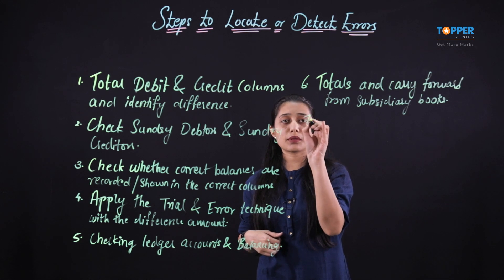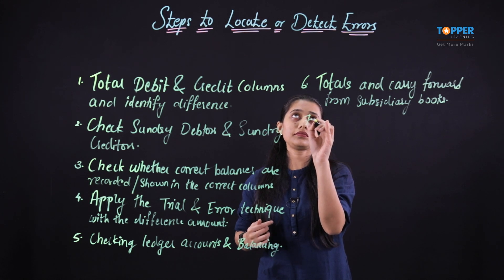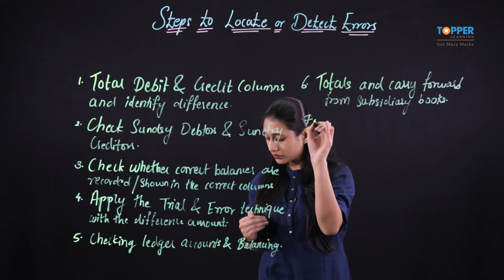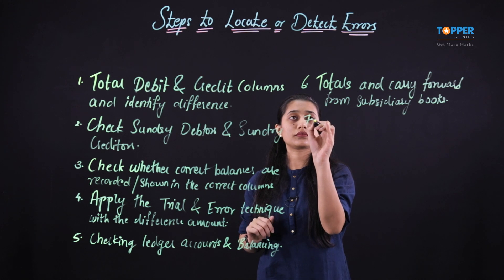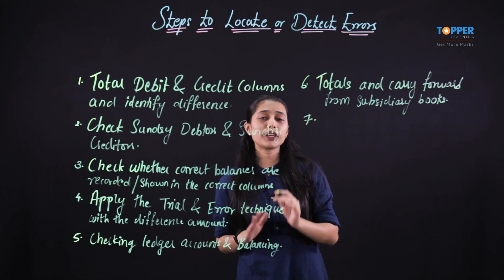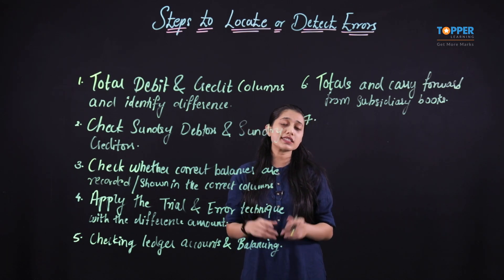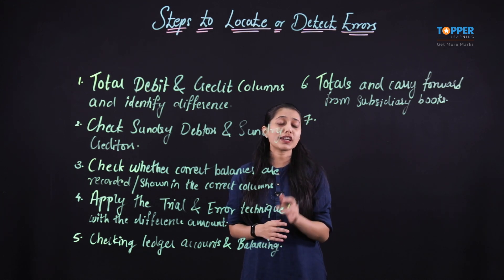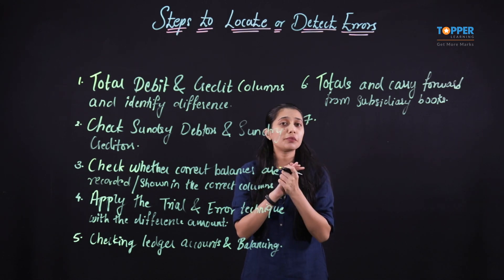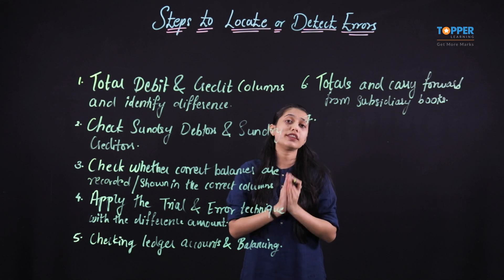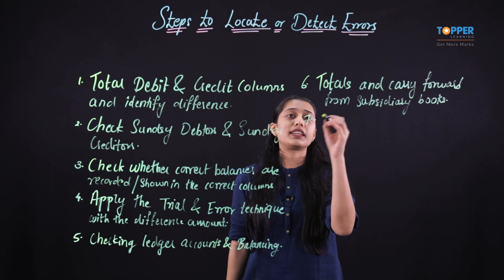Moving ahead to the seventh important point: whenever there is a difference in the trial balance, check all of the account balances with the corresponding accounts in the previous period. So the seventh important point is talking about the balances or the accounts that can be checked with that of the previous year period.